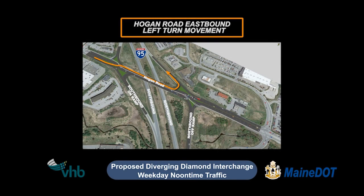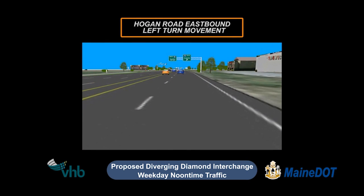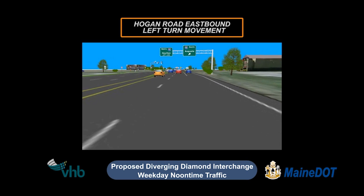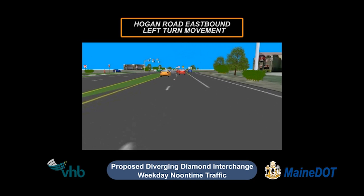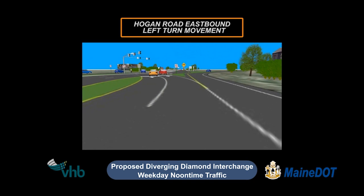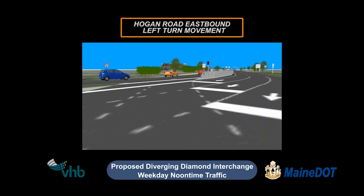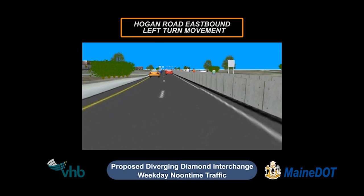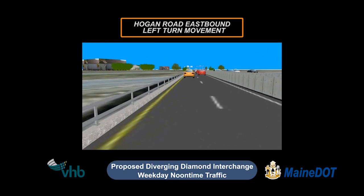Hogan Road eastbound traffic goes through the first crossover and uses the leftmost lane to turn onto I-95 northbound. Here you are heading east on Hogan Road. You continue straight past the southbound on-ramp on your right and approach the first crossover. When the light turns green, you continue through the crossover where you are guided to the left side of the road. To make the left turn onto I-95 northbound, you use the leftmost lane and continue east across the bridge.